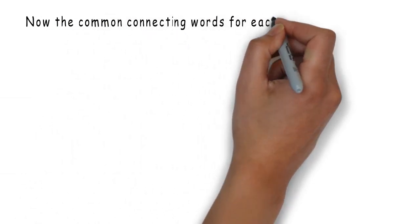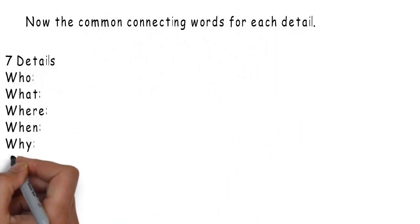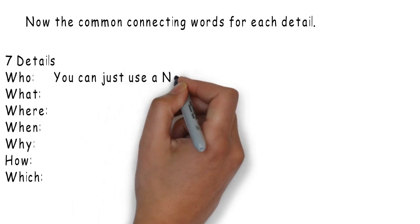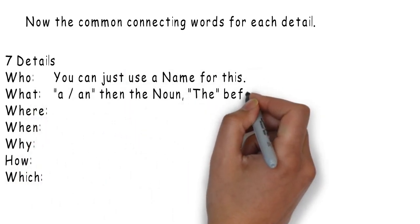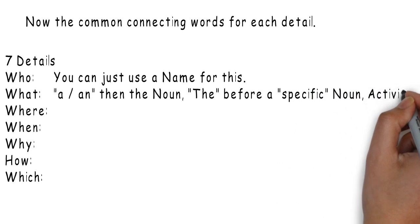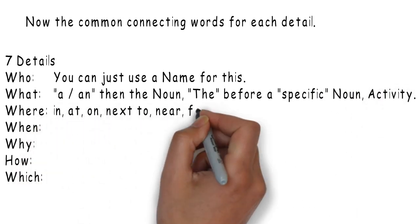Now, the common connecting words for each detail. Here are the details. Who: you can just use a name for this. What: a and an, then the noun. The, before a specific noun or an activity.